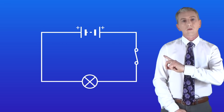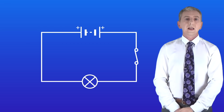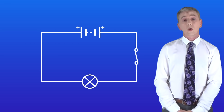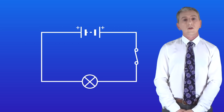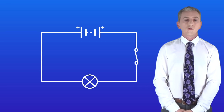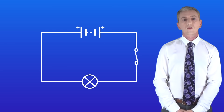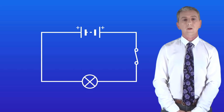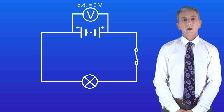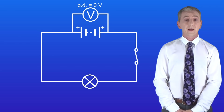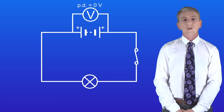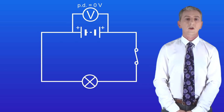Here's another one for you. Again each cell has a potential difference of nine volts. Determine the overall potential difference of this battery — pause the video and try this yourself. Putting a voltmeter across this battery tells us that we've actually got a potential difference of zero volts.